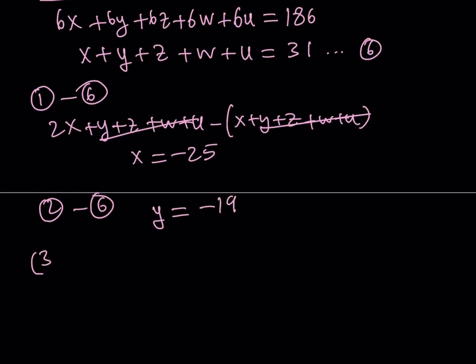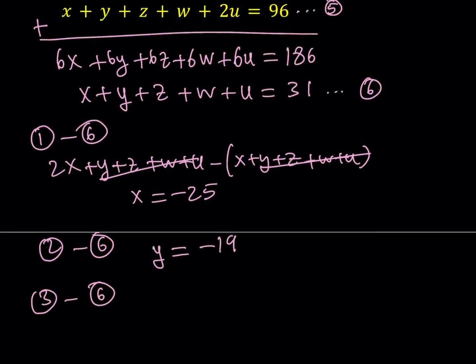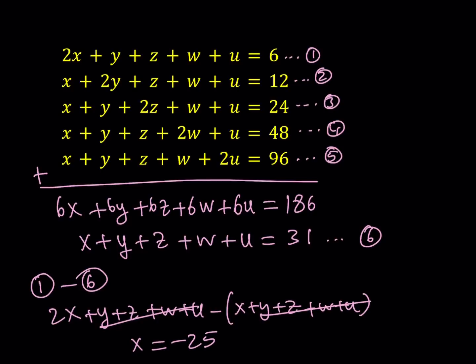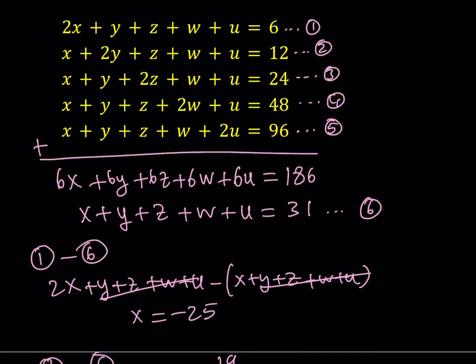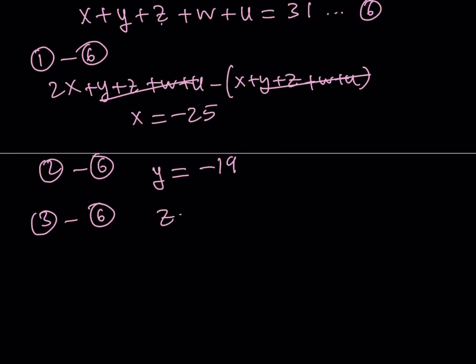Great. Okay, let's go ahead and look at three minus six. Hopefully, this problem will be fixed soon. Three minus six is going to be 24 minus 31. And notice that three minus six is going to give us what? Since Z is doubled, and that's going to give us Z, obviously. So, we kind of guess the pattern, hopefully. Z is going to be 24 minus 31, which is negative seven.